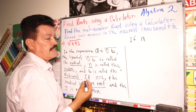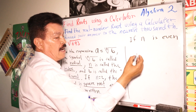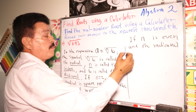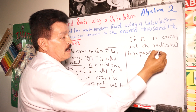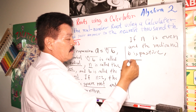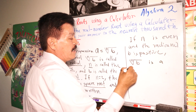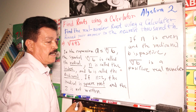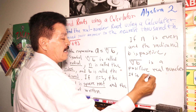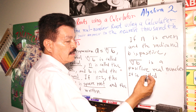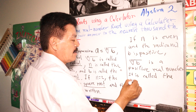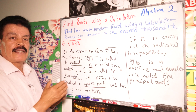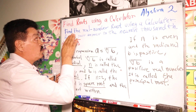And more ideas: if N, in this case, is even, and B is a positive real number, it is called the principal root. So, these are ideas you have to keep in your mind about when you work with roots.